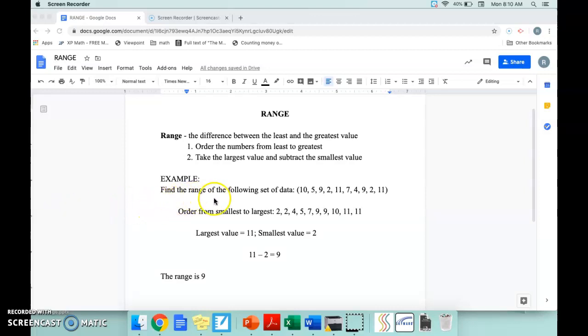So you see here in this example, this is our data set. And what they did is they ordered the numbers from smallest to largest. You can see that there. Our smallest number is 2, and our largest number is 11. So they took 11 minus 2, and they got 9.